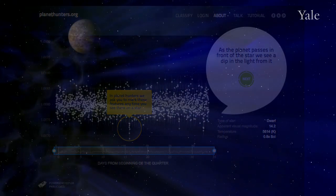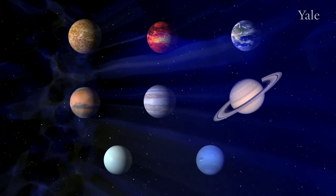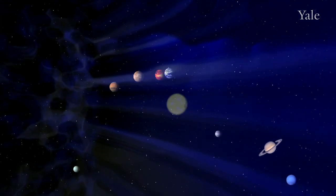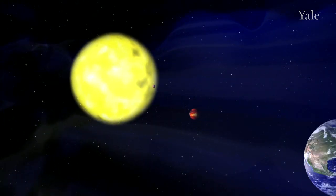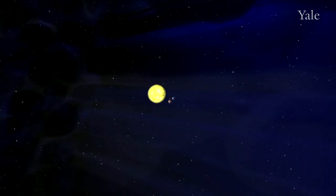In our solar system there are eight planets that orbit our star, the Sun. We've been detecting planets orbiting other stars as well. Since 1995, more than 500 planets have been found orbiting other stars.